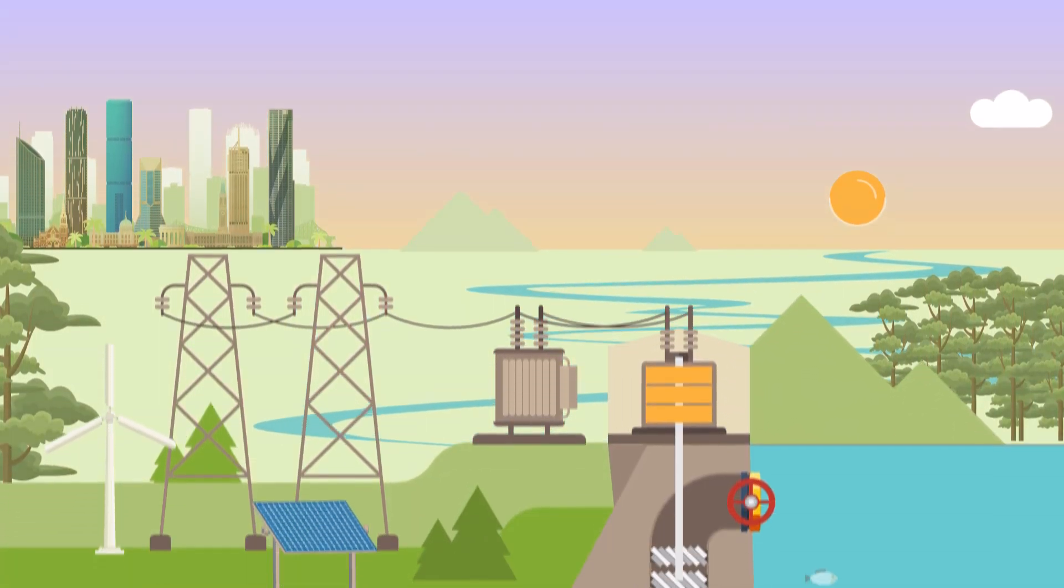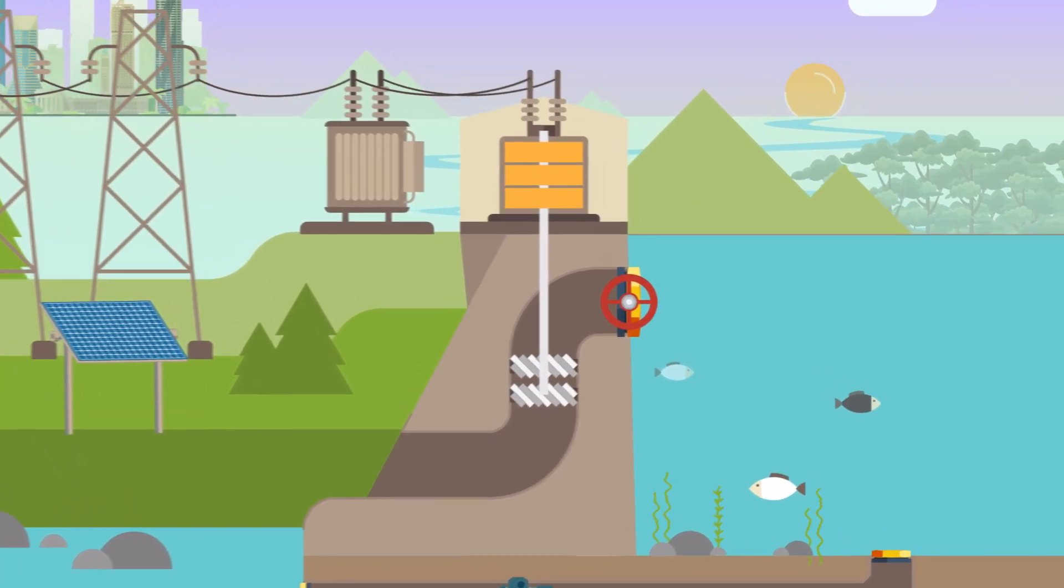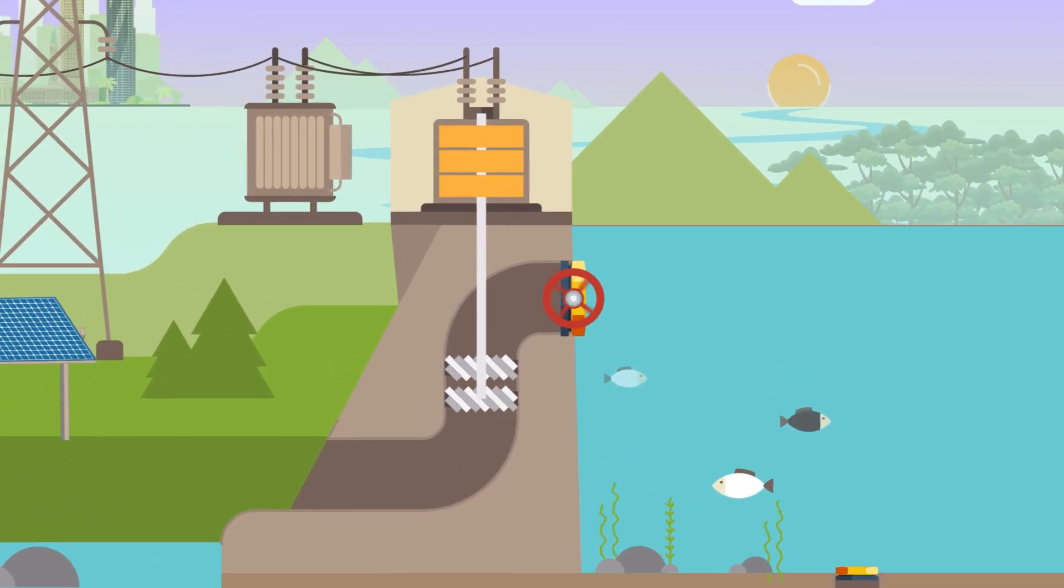Hydropower is energy that is produced by flowing water between two locations. Water is released from one reservoir up high to another reservoir down low.